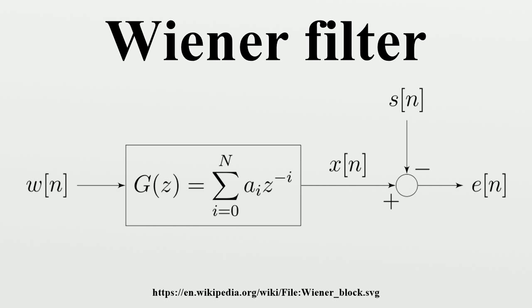The Wiener filter is designed so as to minimize the mean square error which can be stated concisely as follows, where denotes the expectation operator. In the general case, the coefficients may be complex and may be derived for the case where W[n] and S[n] are complex as well. With a complex signal, the matrix to be solved is a Hermitian-Toeplitz matrix, rather than symmetric-Toeplitz matrix. For simplicity, the following considers only the case where all these quantities are real. The mean square error may be rewritten as